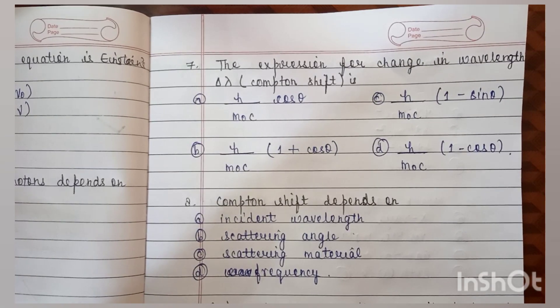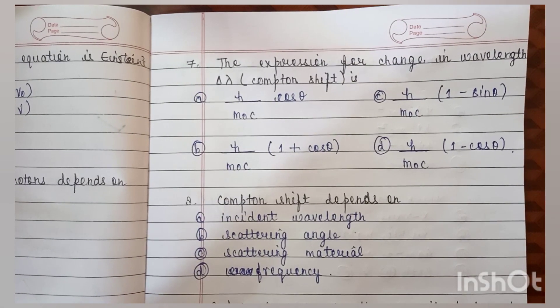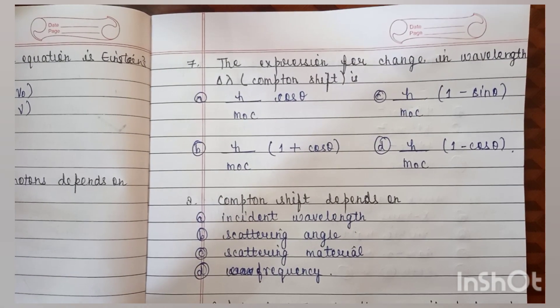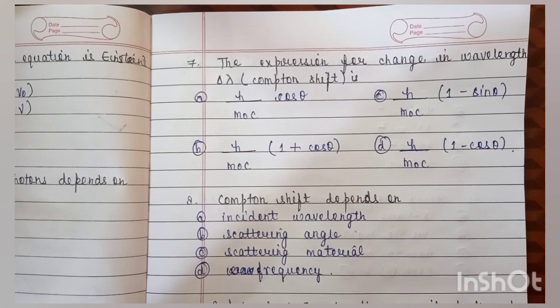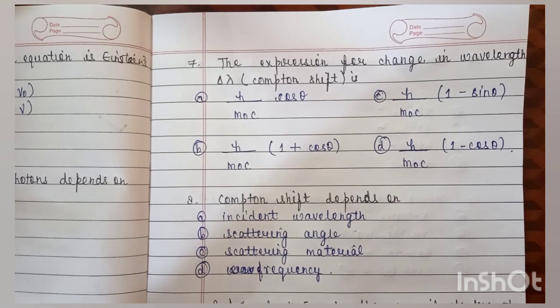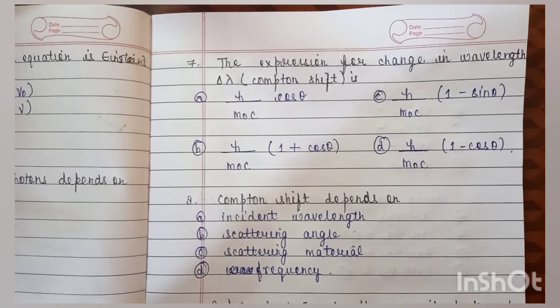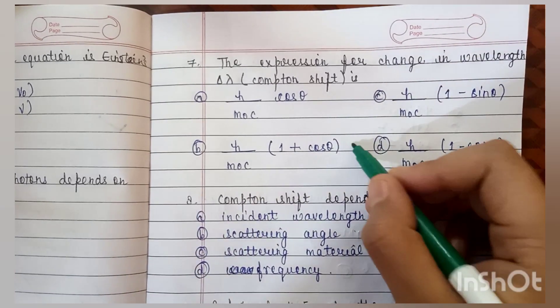Question number 7: the expression for change in wavelength — the Compton shift — is? The correct answer is D.